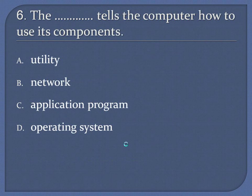Question 6: The blank tells the computer how to use its components. A. Utility. B. Network. C. Application program. D. Operating system. Answer: Operating system.